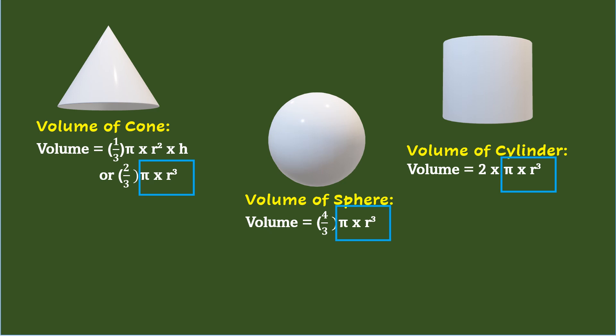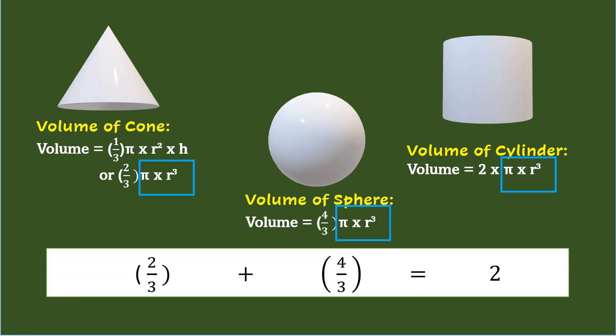The amazing part about the relationship of the volumes of cone, sphere, and cylinder is that the cone's volume is two-thirds combined with the sphere's volume which is four-thirds, and together they equal six-thirds or two, which is exactly the volume of the cylinder.